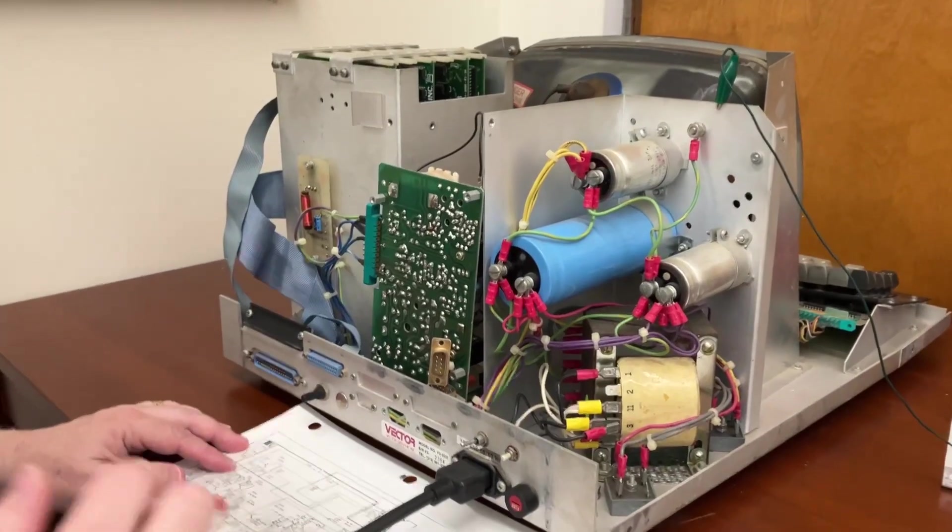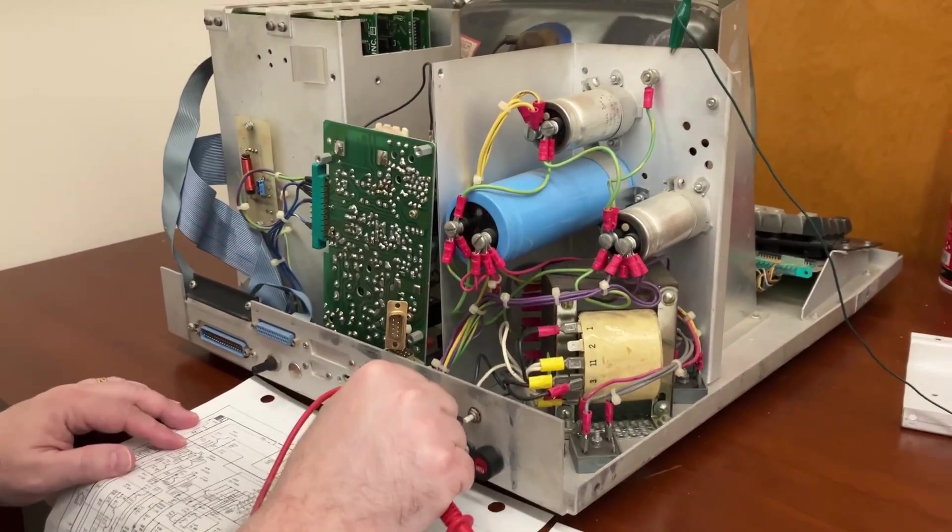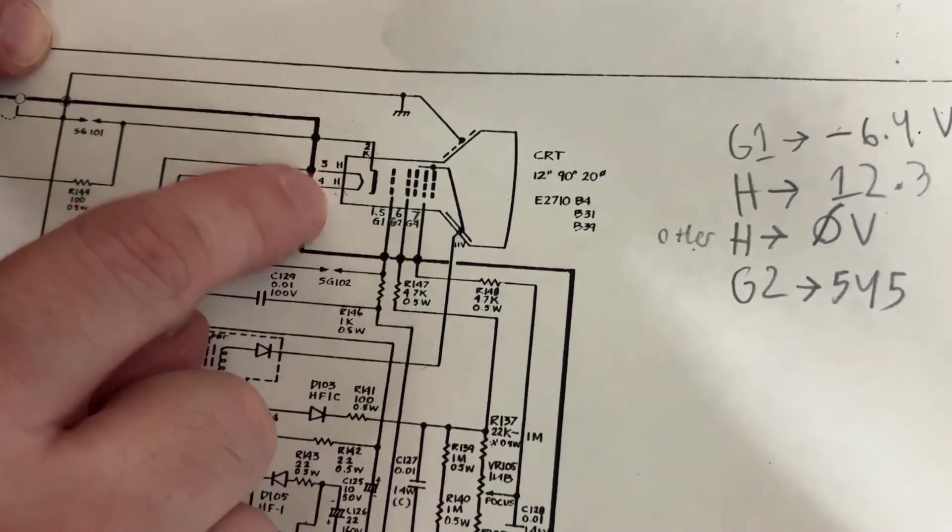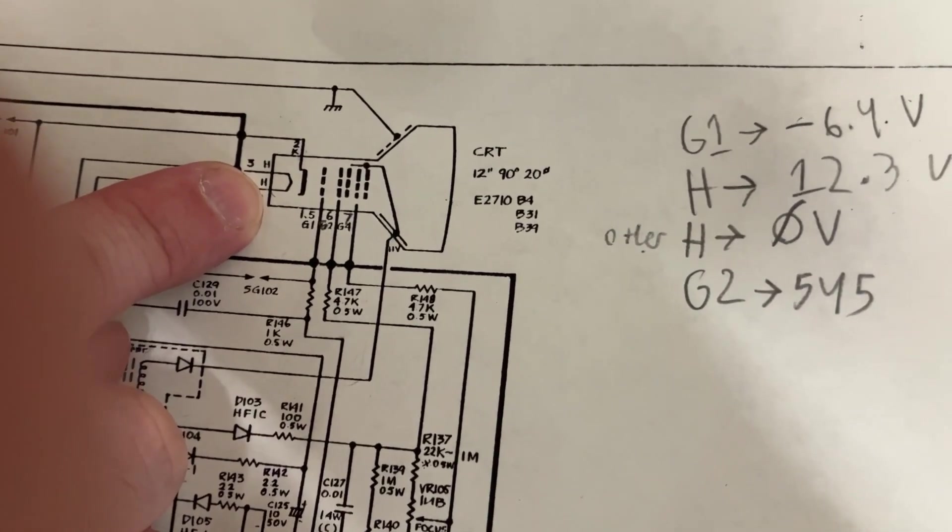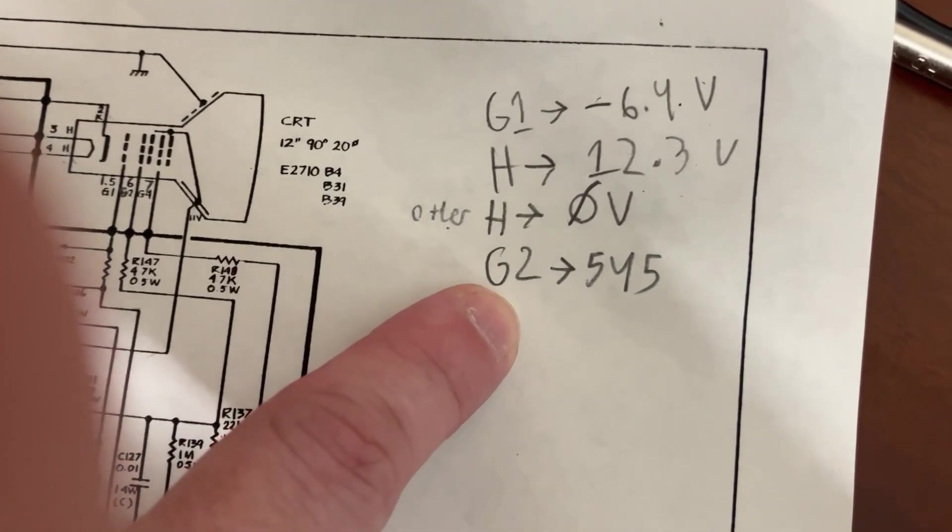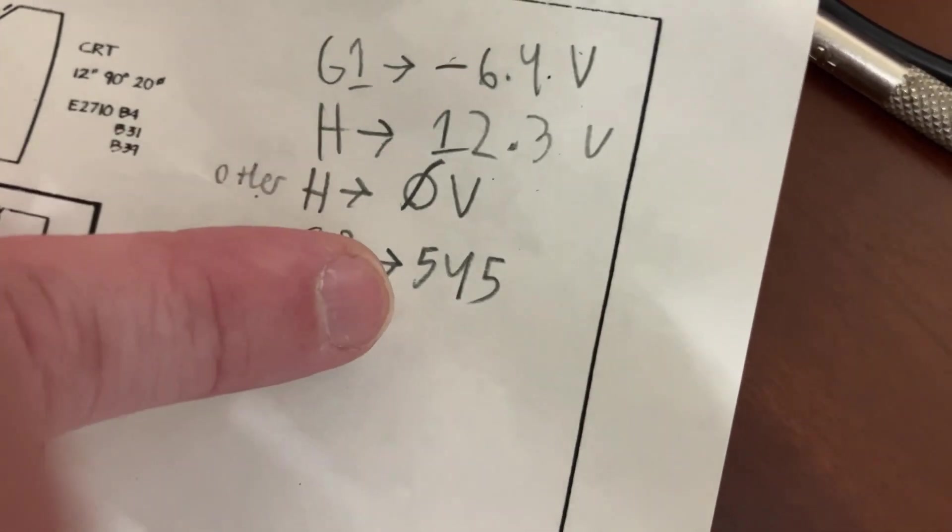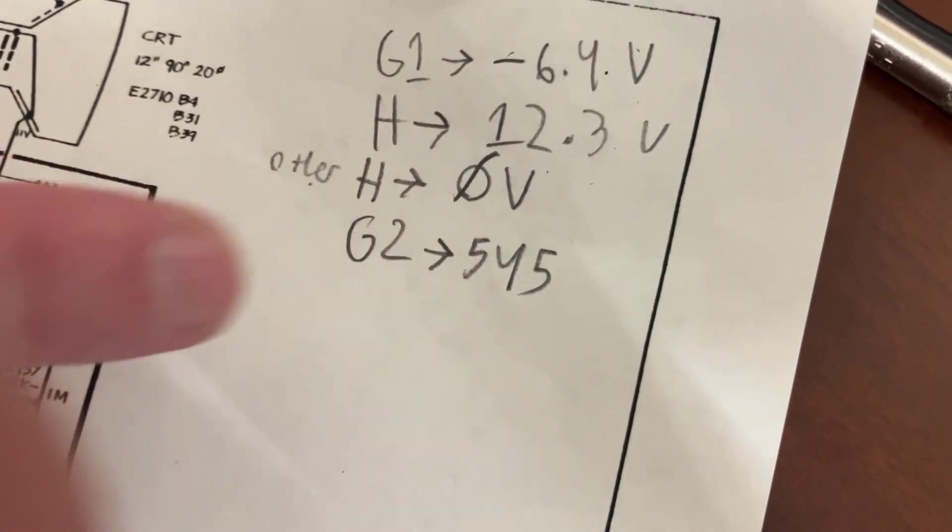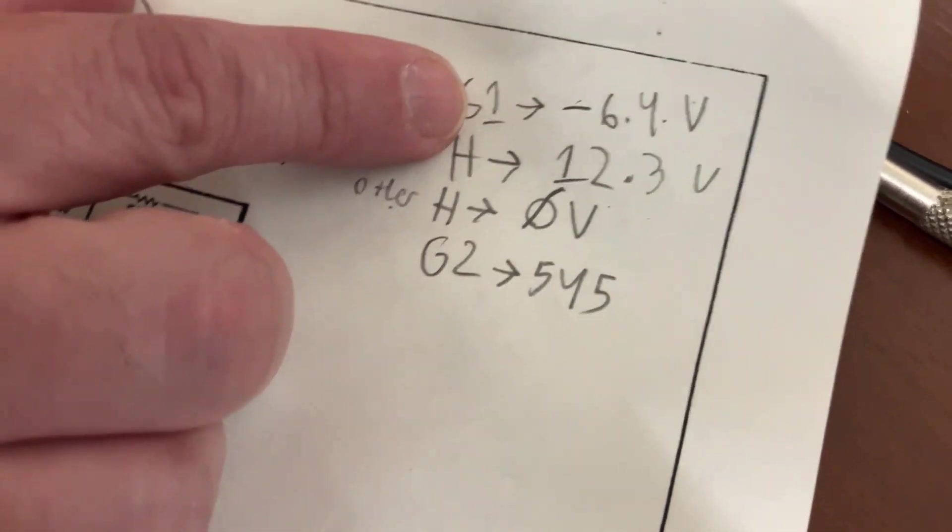All right, here goes nothing. We're about to do some measuring on the grids. We measured a difference of 12.3 volts between the heaters, which is what we would expect. G2 is a test point we found that corresponds to here and we read 545 volts.